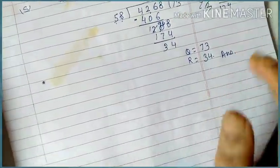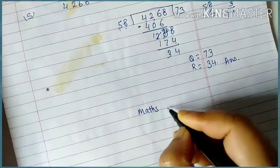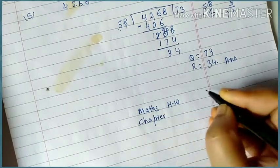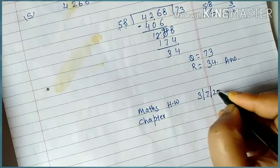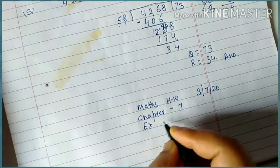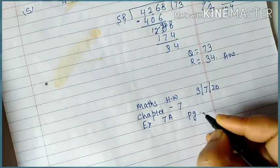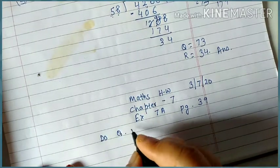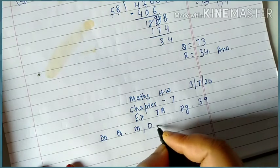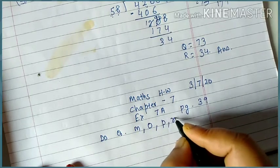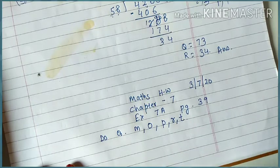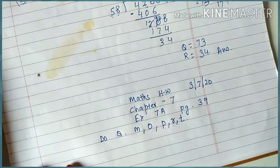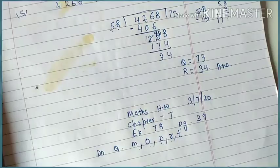Okay children, I am giving you the homework. Today's date: 3-7-20. Chapter 7, Exercise 7A, page 39. Do questions M, O, P, R, and T. So hence we will complete this exercise 7A here. Thank you very much children, take care of yourself, complete your homework.